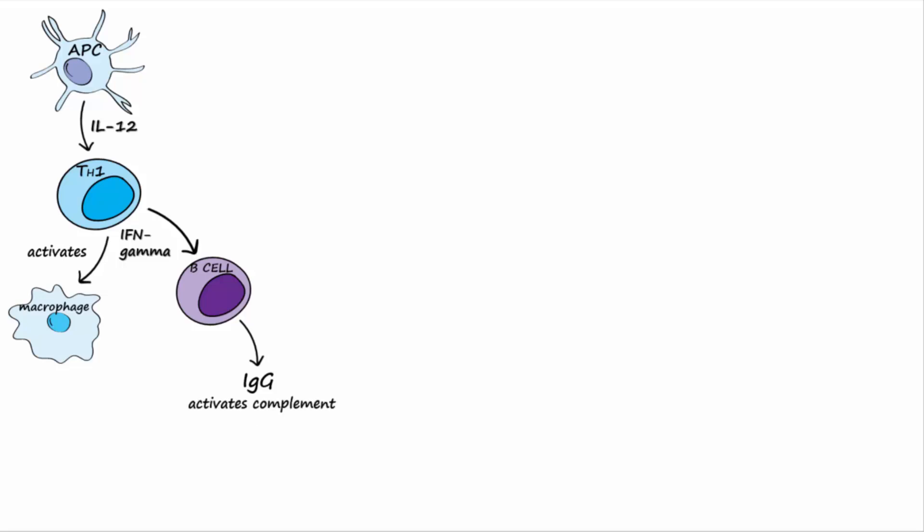If the antigen presenting cell secretes the cytokine IL-12, the naive helper T cell matures into a T helper 1 cell. The helper T1 cell then secretes the cytokine interferon gamma, which activates macrophages and causes B cells to produce IgG antibodies, which are important in activating the classical complement pathway and for opsonization of microbes. Helper T1 cells are also the subtype that activates cytotoxic T cells.